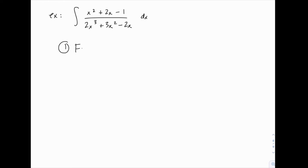We want to start by factoring 2x³ + 3x² - 2x. First, we notice that there's an x common to all of these terms. But once we pull that out, we need to factor this remaining quadratic.